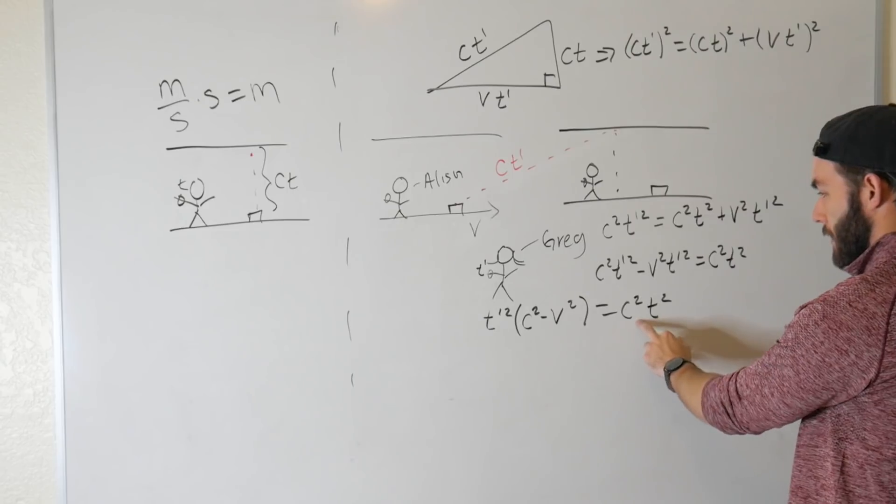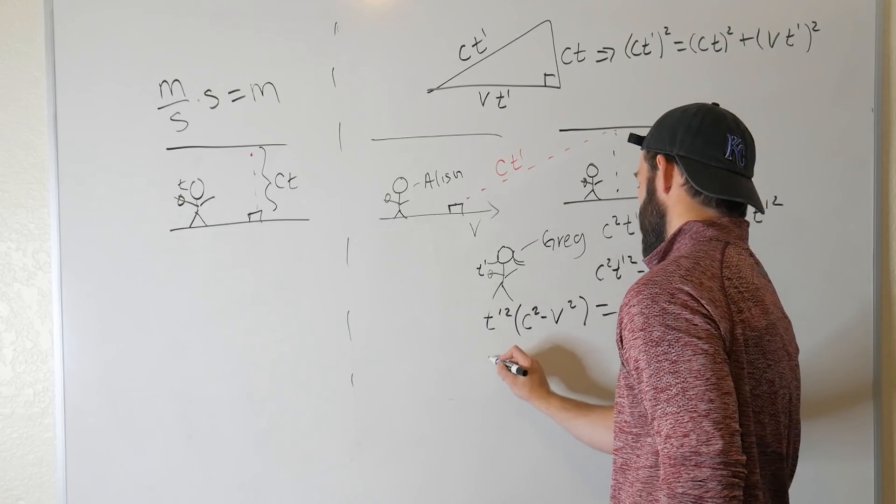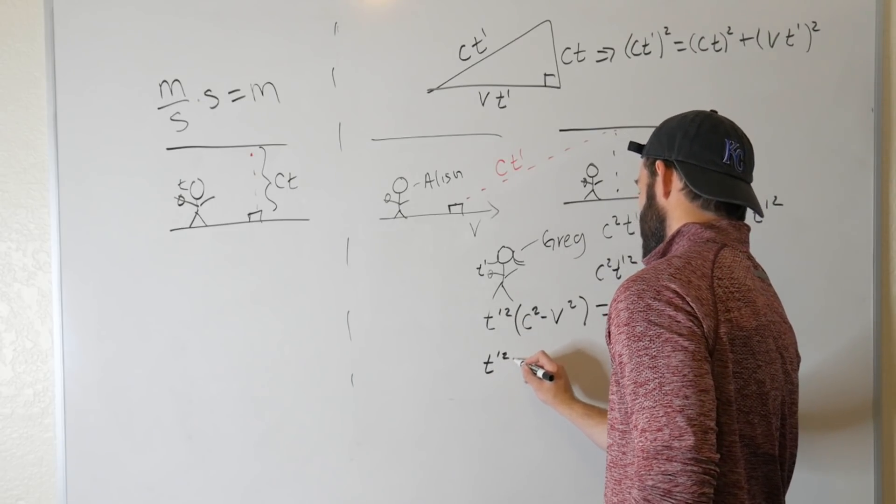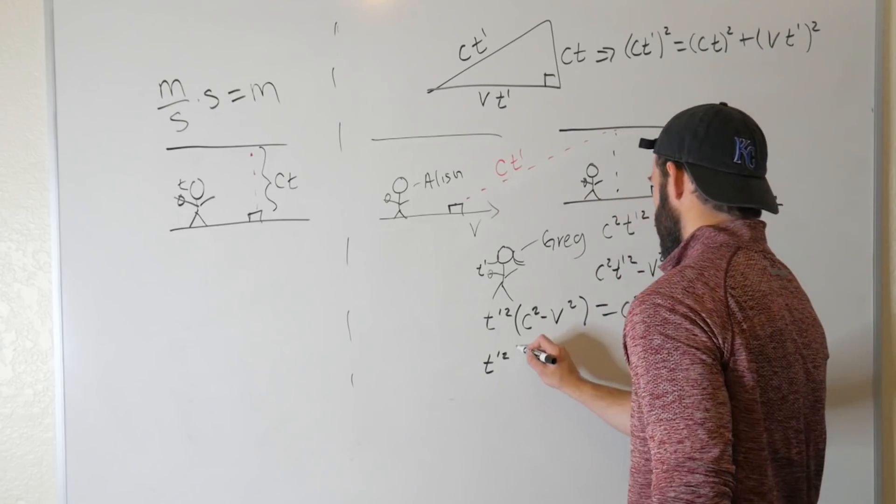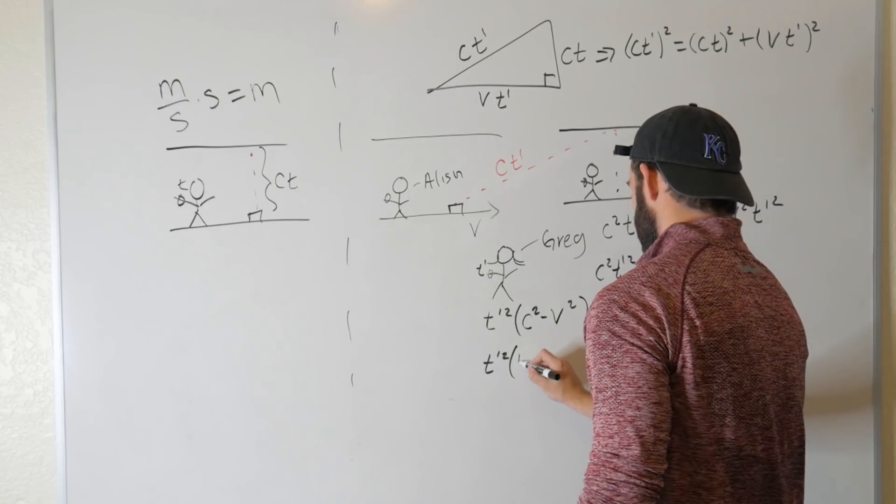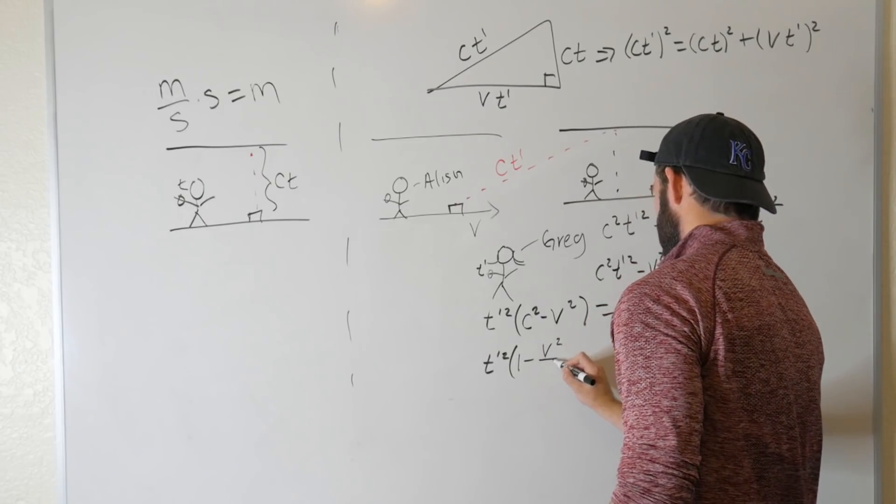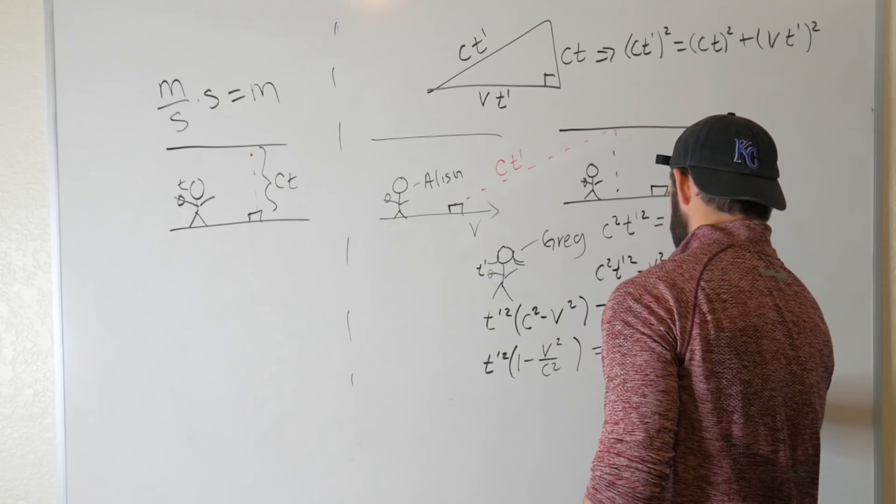Let's go ahead and divide by this factor of C squared. So we get T prime squared is equal to T prime squared times C squared divided by C squared is 1 minus V squared over C squared is equal to T squared.